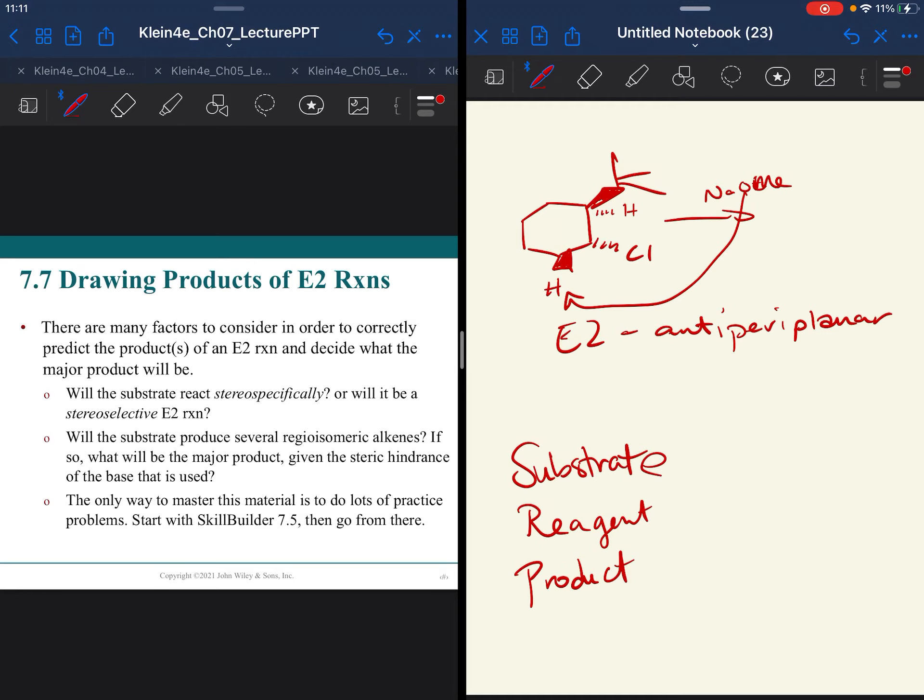If you are making a new chiral center, you want to think about the stereospecificity. Is it going to be R or is it going to be S? Is it going to be inversion of stereochemistry or not? So you're going to start going through a checklist when you approach these problems.